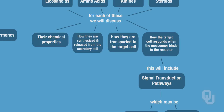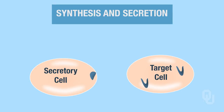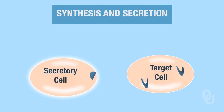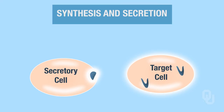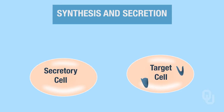This is an overview slide that gives you an idea of what we're talking about, and you're going to be seeing this image several times. In this section of the notes, we're looking at how the ligands are produced by the secretory cell. Here's my secretory cell — it's going to synthesize and secrete my ligand. Once it gets synthesized, it can be secreted from the cell.